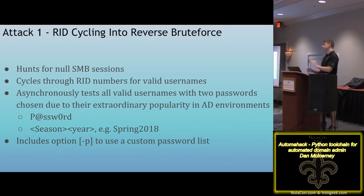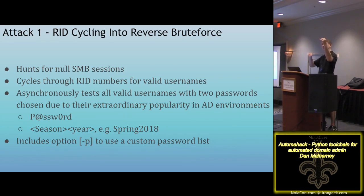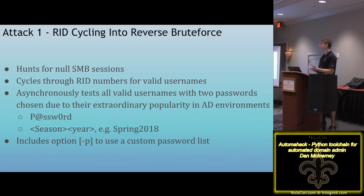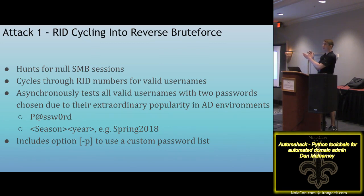The first attack is the nice, simple, and fast RID cycling into reverse brute force. A reverse brute force is when you take a short list of passwords and a long list of usernames, and you test that short list of passwords against those names. We do this instead of a full brute force because brute forces tend to lock systems out, so we're doing just two passwords per username. It finds usernames by looking for null SMB sessions, or if you give it a domain name, it'll scrape email addresses and use the first half as the username.